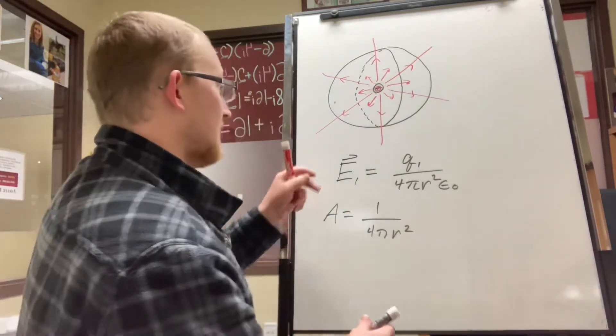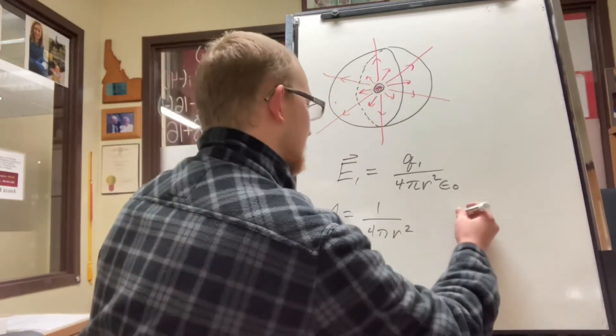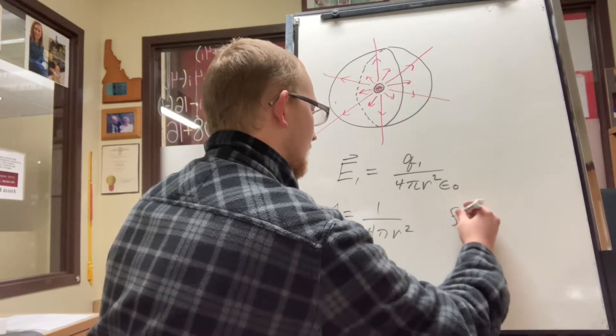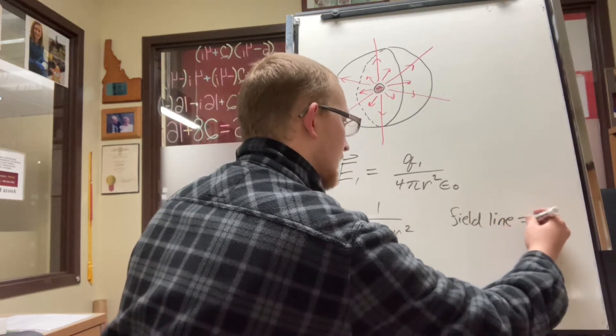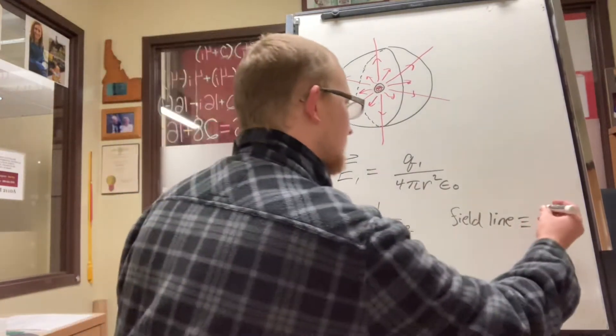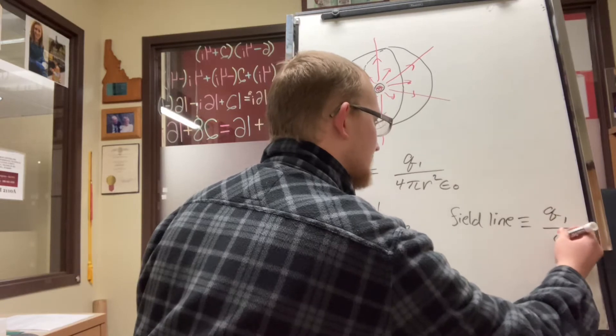And so the quantity of lines that we have due to this charged particle is going to equal, let's write it as field lines. This isn't actually a real quantity as far as I know, it's more of an example. So the amount of field lines is going to be proportional to q1 over epsilon sub naught.